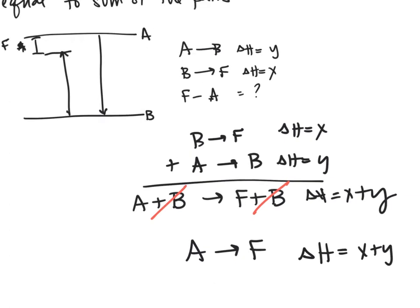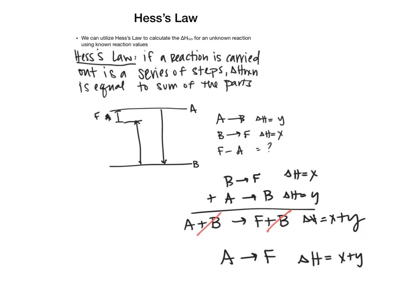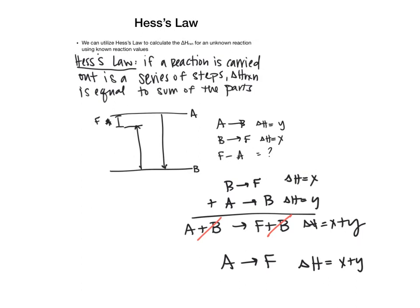This is a long way to say we can calculate delta-H for an unknown reaction if we know another way to get there. Hess's Law is often tricky for students because they get overwhelmed. I think about this like a crossword puzzle or a Sudoku puzzle, where the goal is to move different informational parts in order to see what we can learn.